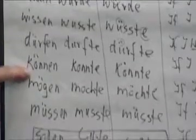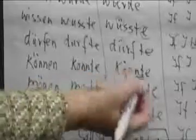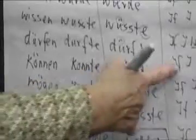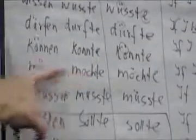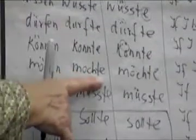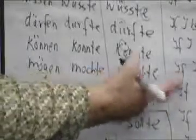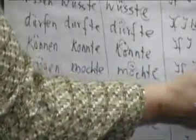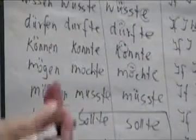Können, means to be able to, past tense is konnte, could, könnte, umlaut, if I could. Mögen, means to like, mochte, liked, möchte, umlaut, if I wanted to. Here it's in the sense of wanting to do something.